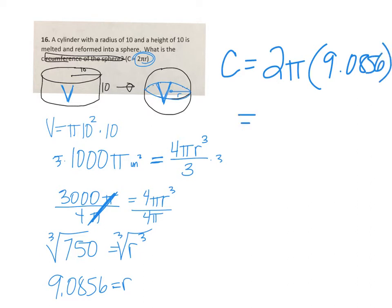So times 2 and times π, we get a circumference of 57.087 units.